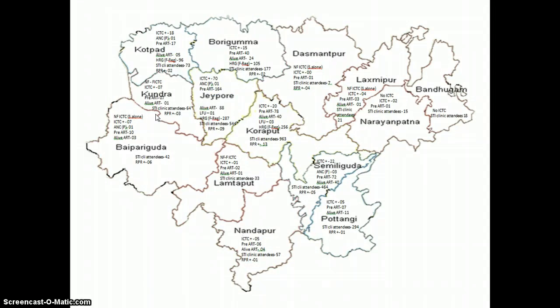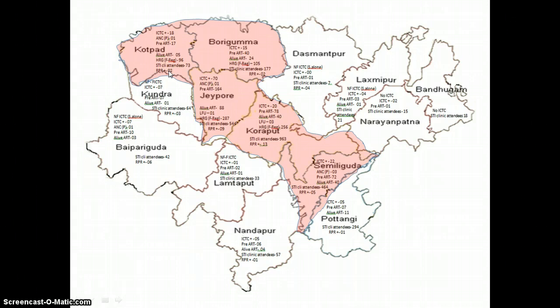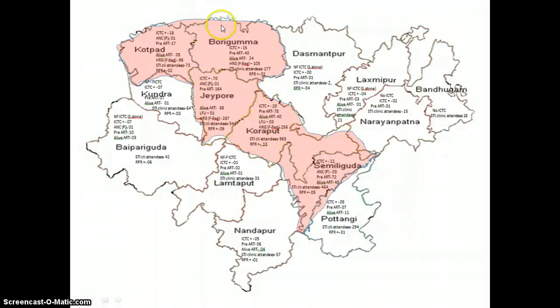This slide provides a summary of all the maps we have seen. Five mandals are the places where we have our TI intervention. The targeted intervention areas are highlighted here. We can also see the maximum number of STI clinic attendees, maximum pre-ART registrations, people alive on ART, and LFU RPR reactors all concentrated in this area. This entire highlighted area is the TI intervention area — five blocks.